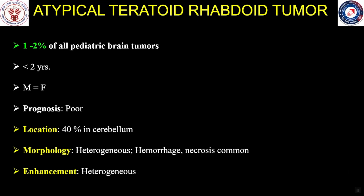ATRTs constitute about 1–2% of all pediatric brain tumors, with a peak incidence under 2 years of age, and equal incidence in males and females. Prognosis is invariably poor, with most children dying within 6–7 months. About 40% of ATRTs are located in the cerebellum and are heterogeneous neoplasms with areas of hemorrhage and necrosis, showing heterogeneous post-contrast enhancement.